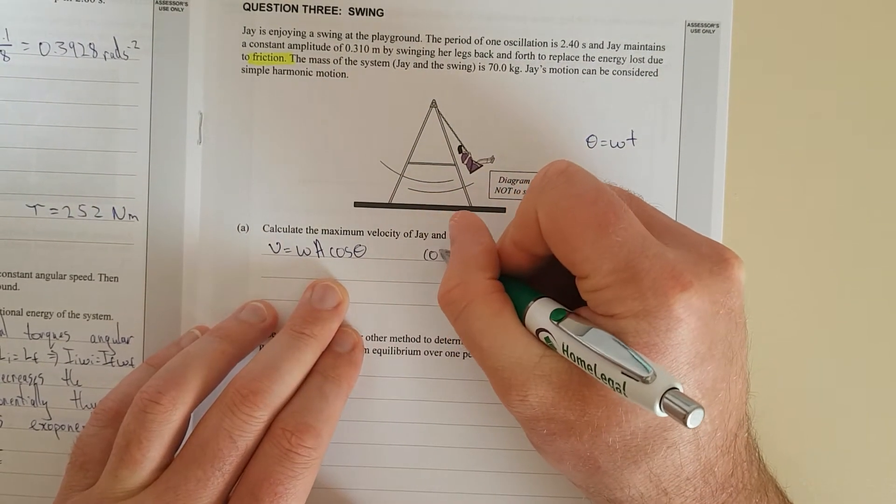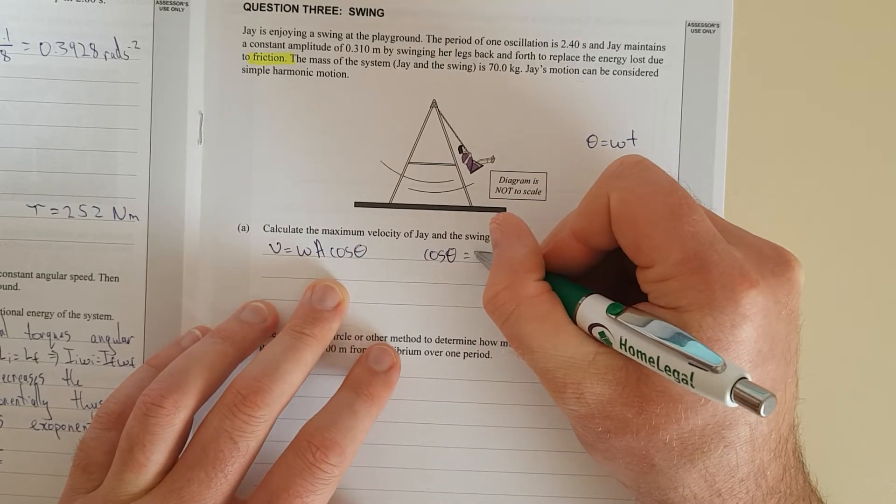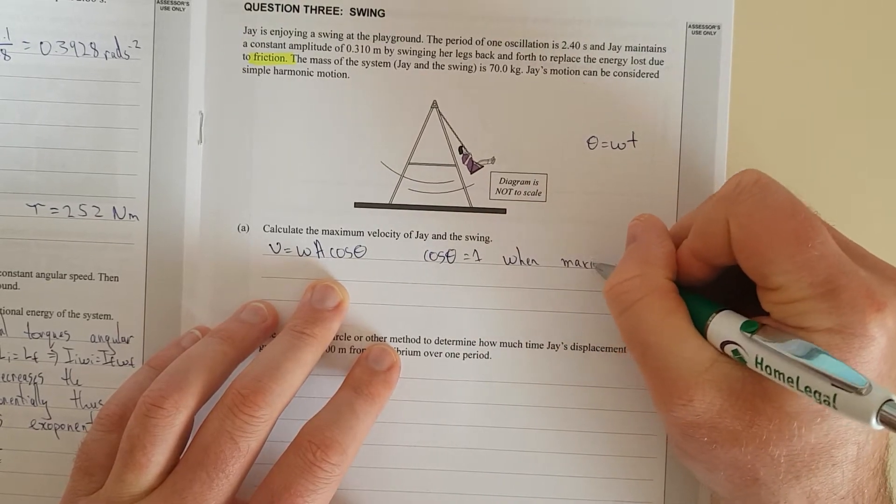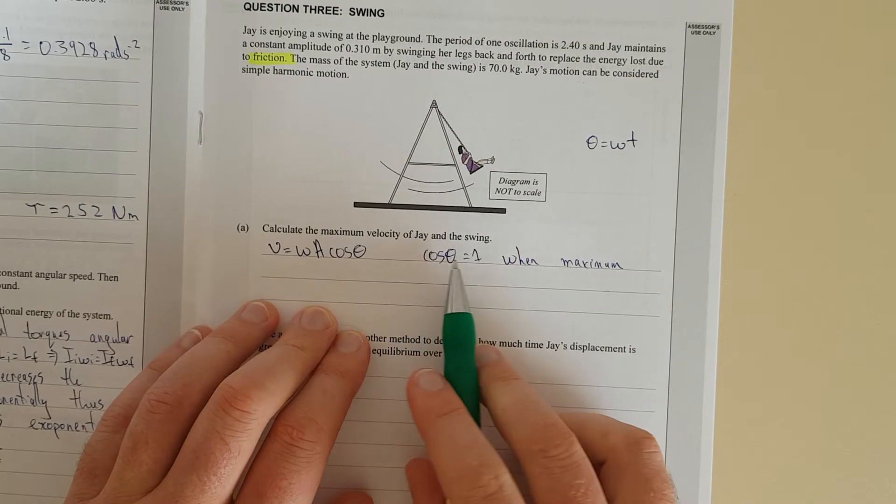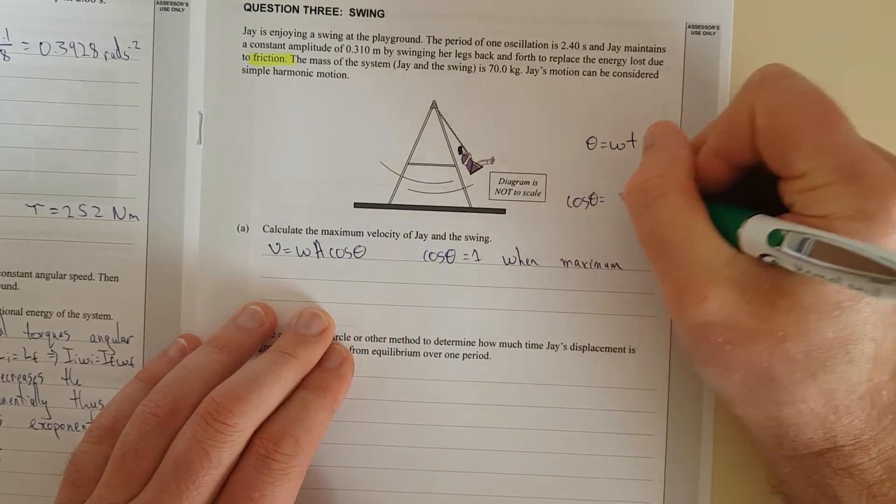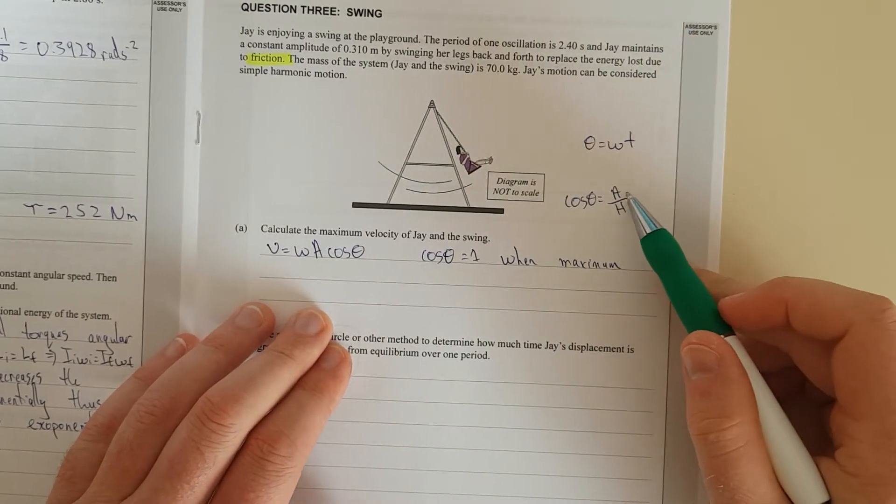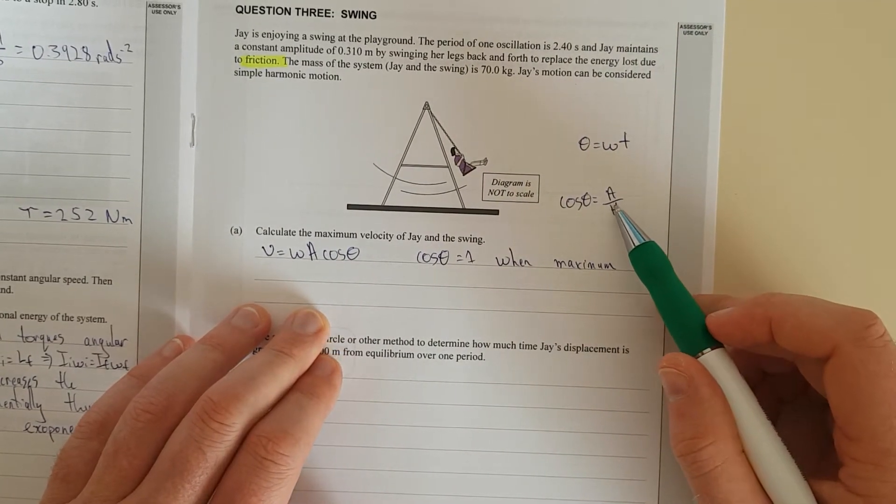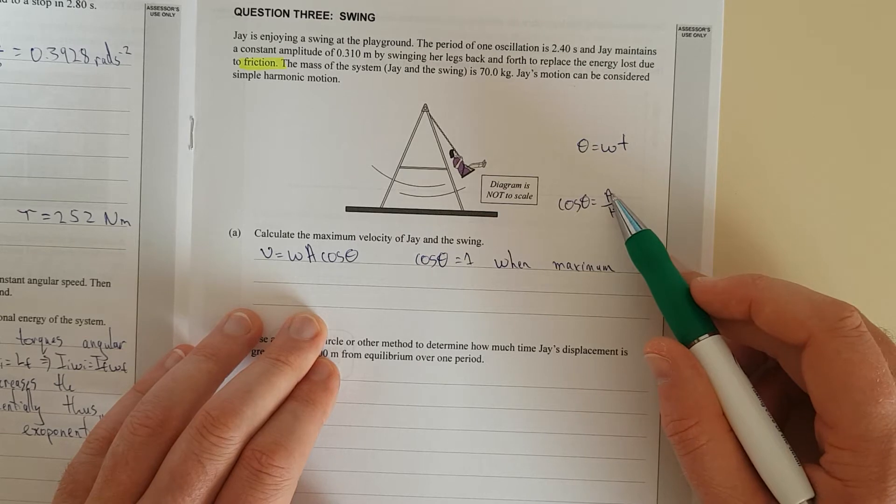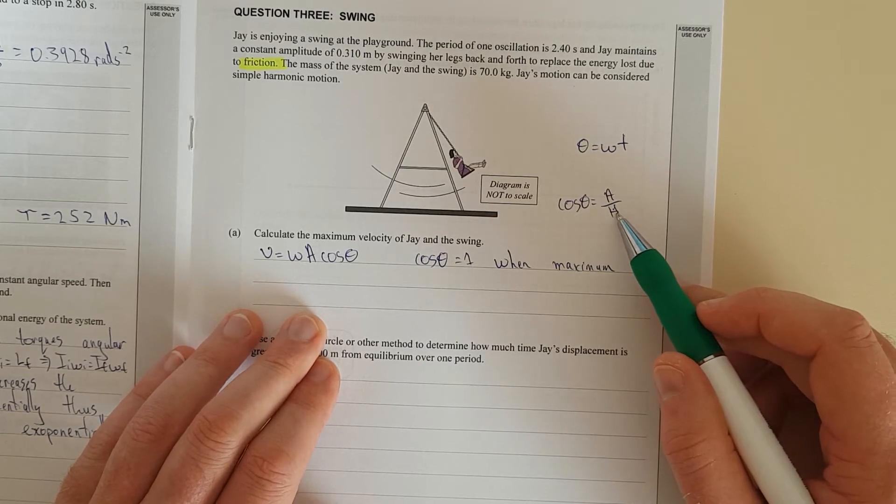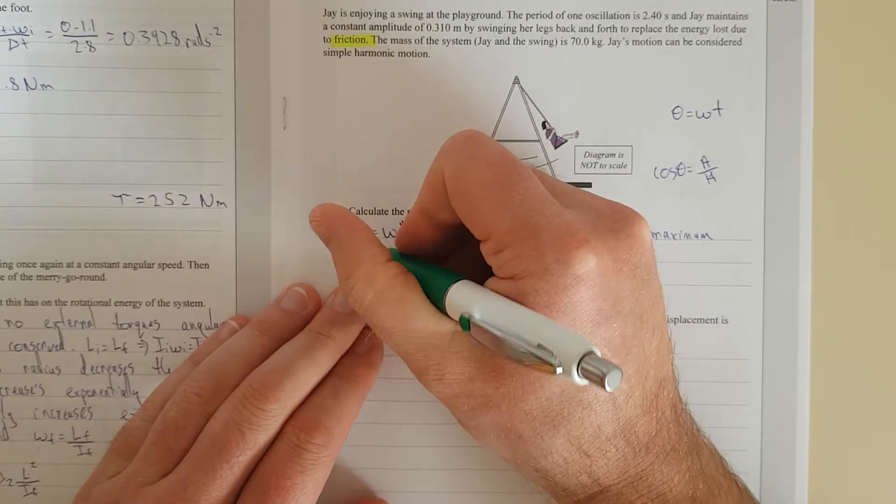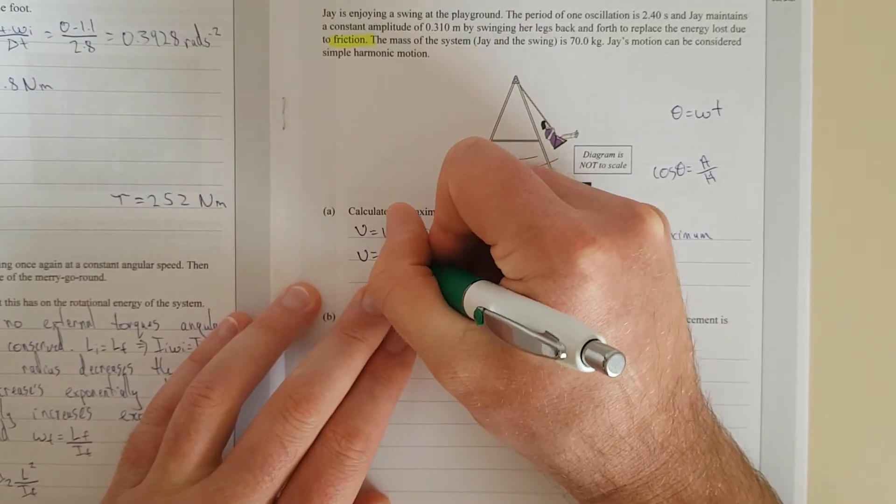Now, cos theta equals one when maximum. This is the largest cos theta can ever be. Cos theta is equal to the adjacent over the hypotenuse. And the definition of the hypotenuse is it's the largest side of the triangle. So, as soon as the adjacent gets to the point where it's the same size as the hypotenuse, you no longer have a right angle triangle. So, the maximum velocity is just equal to the angular velocity times the amplitude.